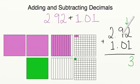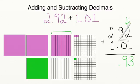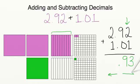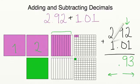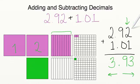We have 9 tenths plus 0 tenths, which equals 9 tenths. We make sure to bring our decimal point down, because that keeps our whole numbers to the left of the decimal and our decimal values to the right. We have 2 wholes and we are adding 1 more, which gives us 3 wholes. So 2 and 92 hundredths plus 1 and 1 hundredth equals 3 and 93 hundredths.